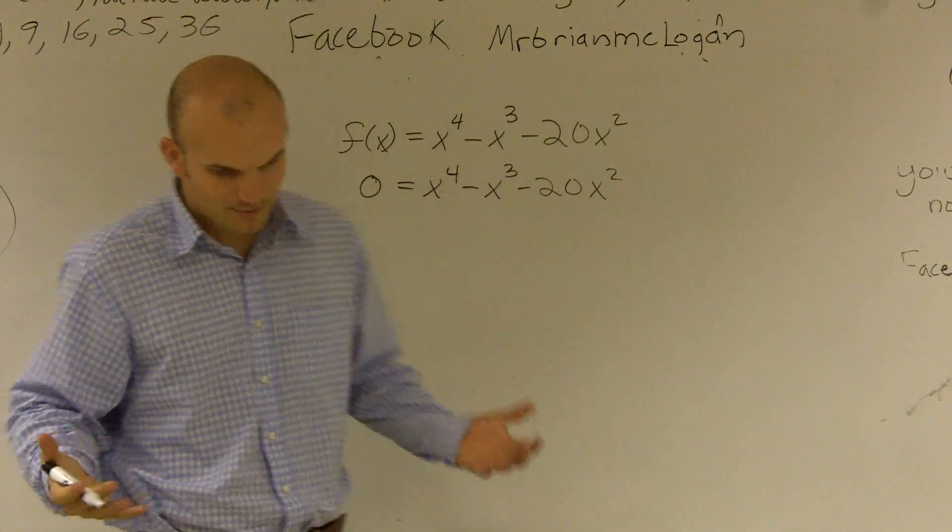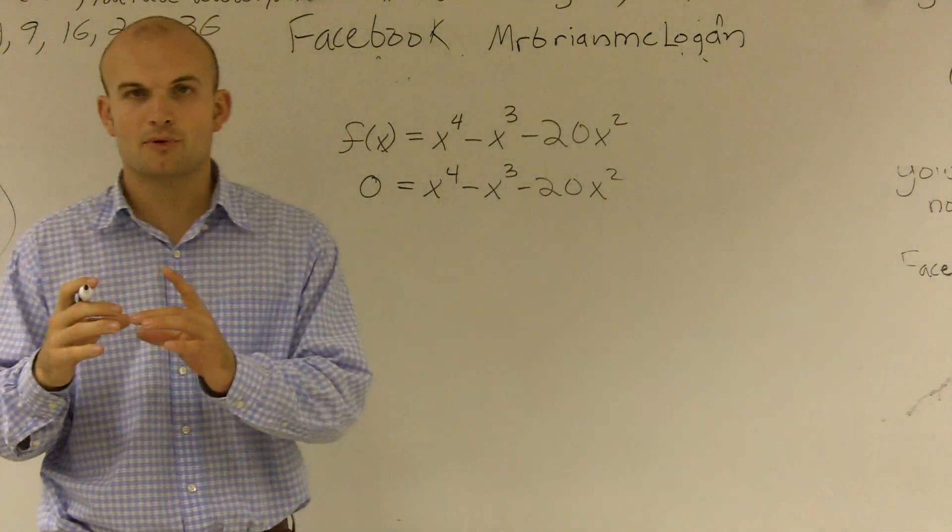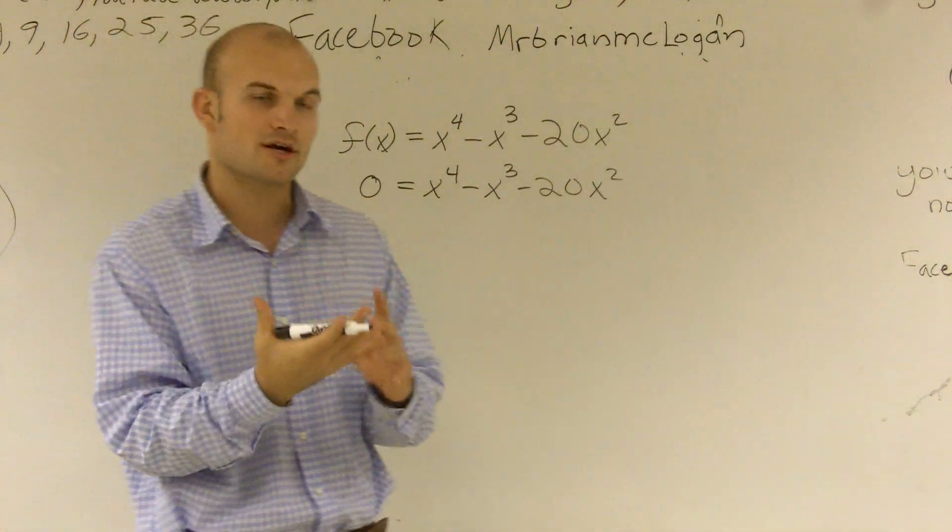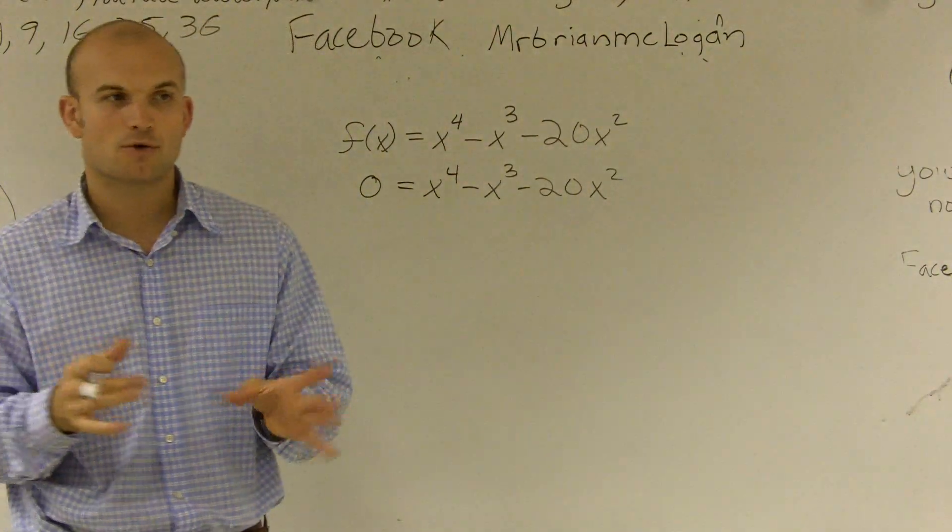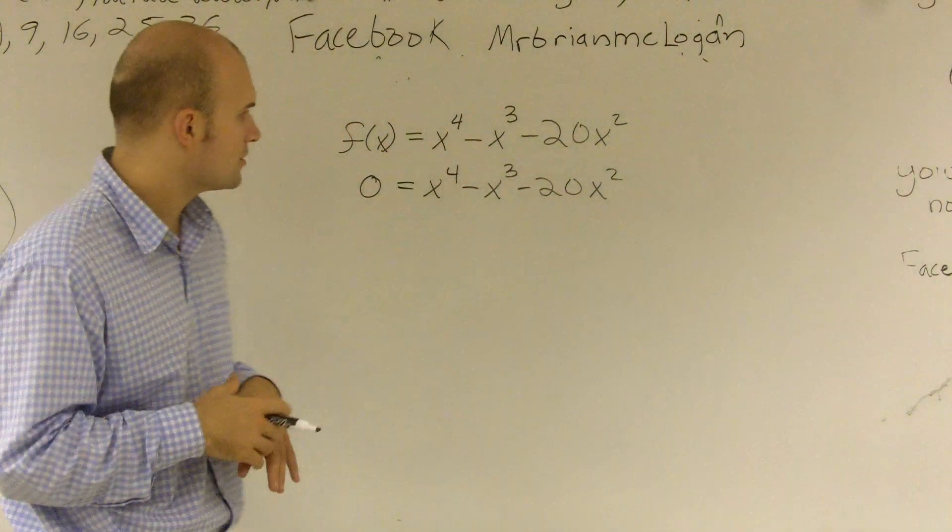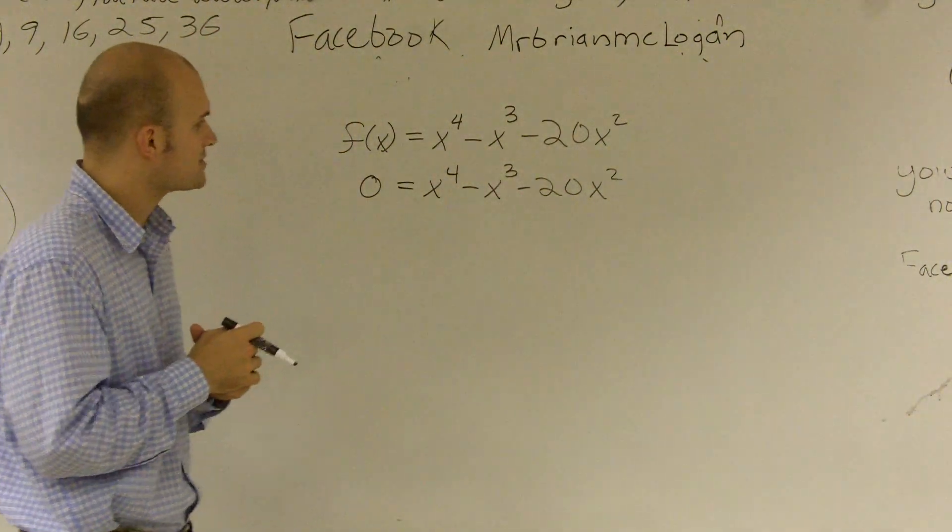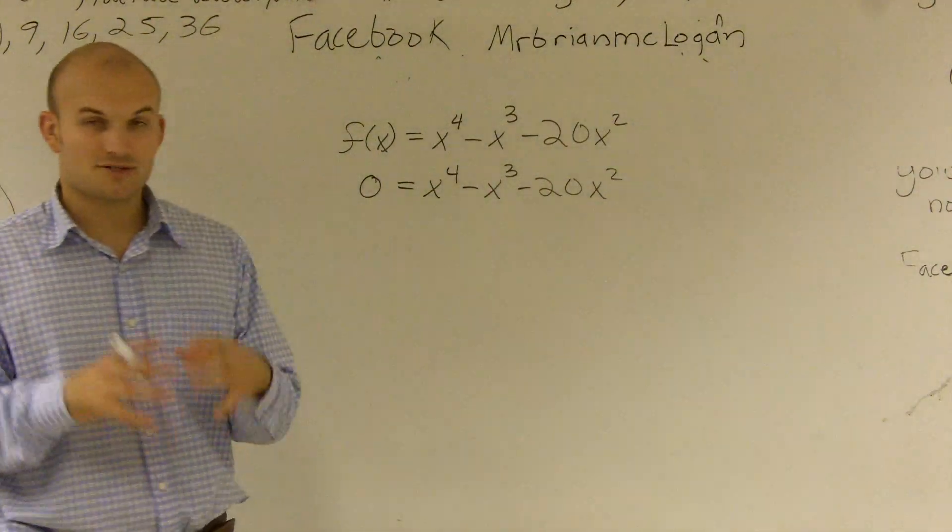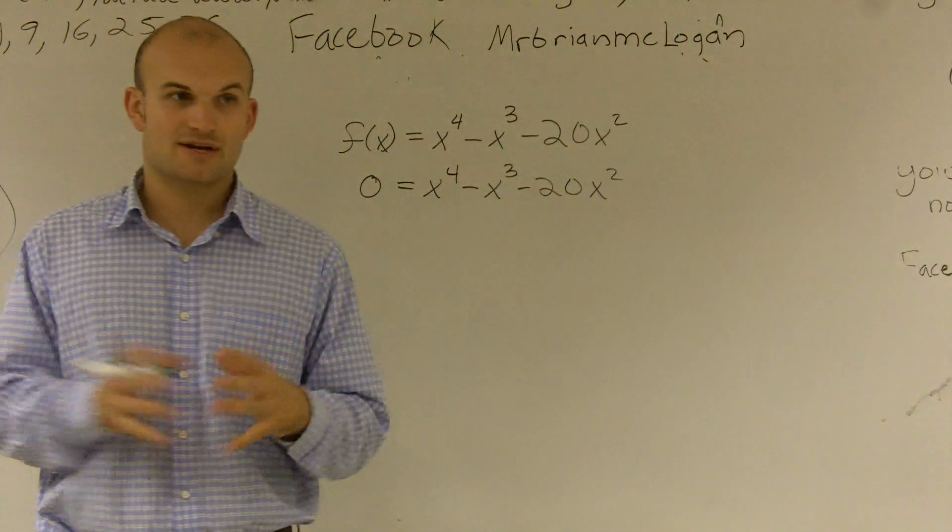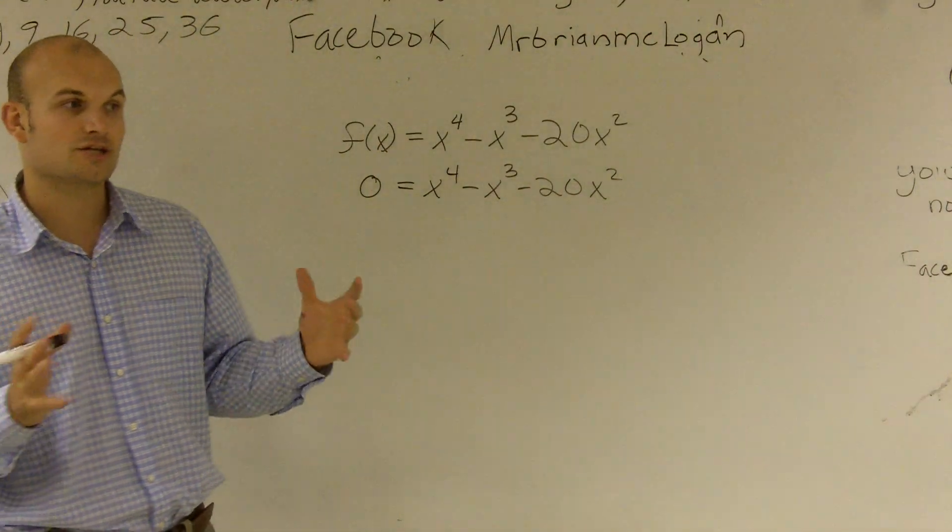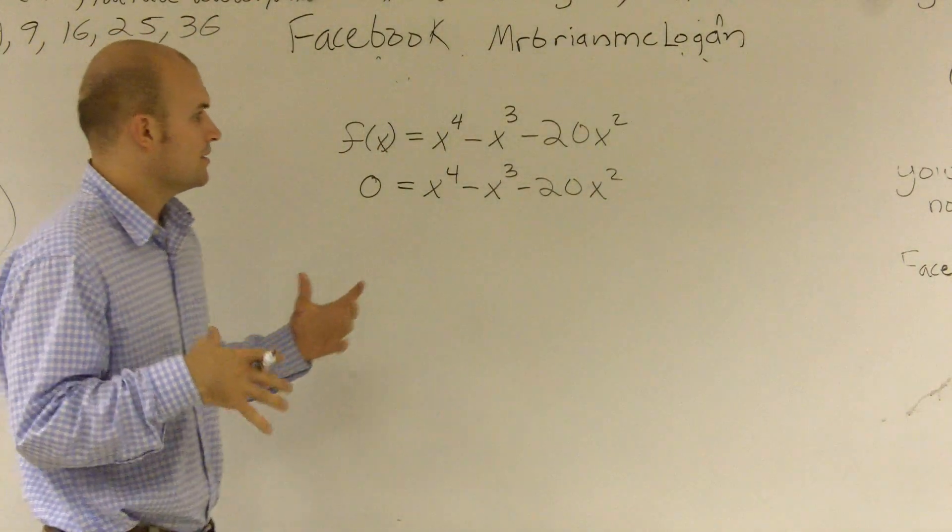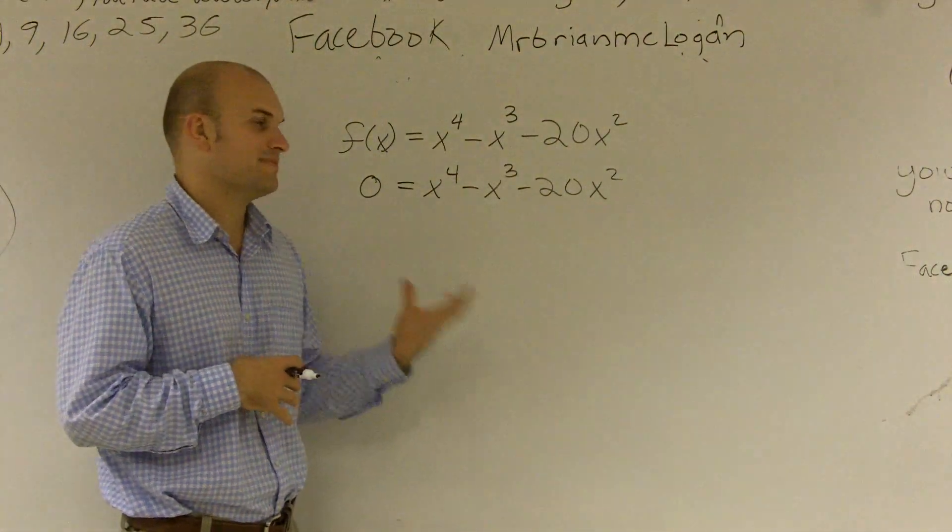All right, so in Algebra 1, we learned how to isolate the variable and get your x by itself, and we usually were only dealing with linear terms. A couple times we might have started getting into quadratic or square terms where we could take the square roots. Then in Algebra 1, 2, we also started learning about trinomials and factoring and getting it as a set of linear terms. And we're going to be looking for the same thing.